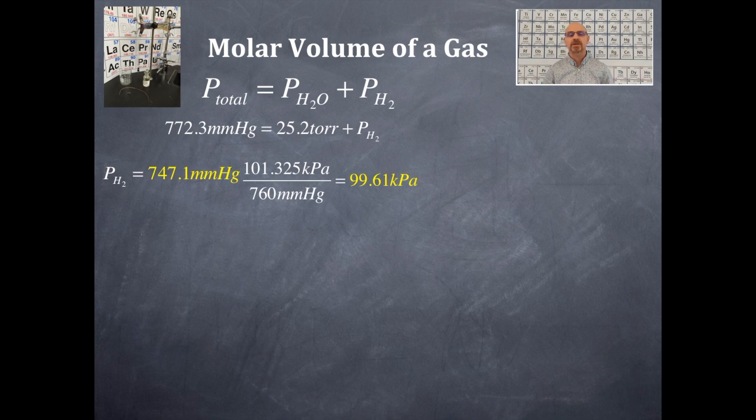So I've used 760 millimeters of mercury, which in this case, because it's a unit conversion, has an infinite number of significant figures. The 101.325 kilopascals has an infinite number of significant figures, again, because it's a unit conversion. And I have the same number of significant figures, that's four, in the 99.61 kilopascals that I had in the 747.1 millimeters of mercury. So now I've converted to kilopascals. And the reason I've done this is because the units for STP conditions are using kilopascals. So that makes this nice and easy. So I'm going to always convert to what the STP condition units are.